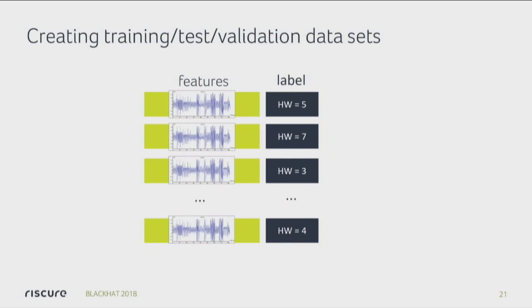Once we apply this to our type of data, what we're really doing is we're taking these traces and turning them into one input vector — basically one neuron per sample that we have in the trace. And we don't label them as cats and dogs, but we label them by the Hamming weight of, for instance, the output of the S-box. This is called the leakage model — a term from side-channel analysis. But basically this is, again, a classification problem. We take in a trace and we want to figure out what the Hamming weight of that S-zero value is.